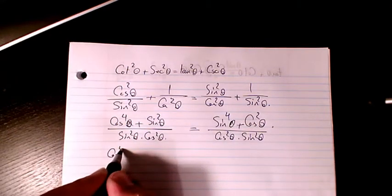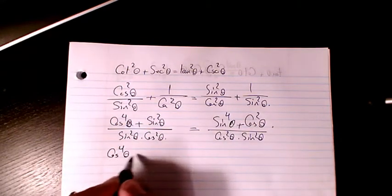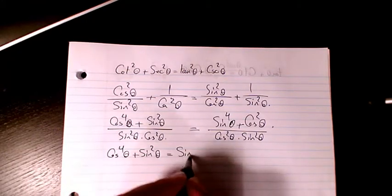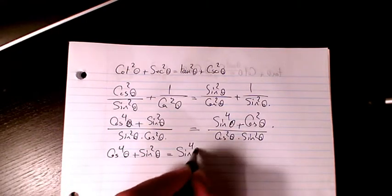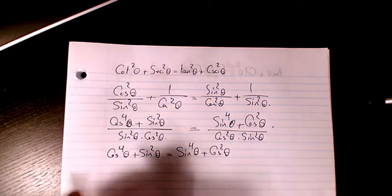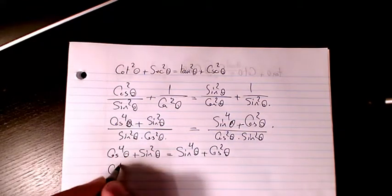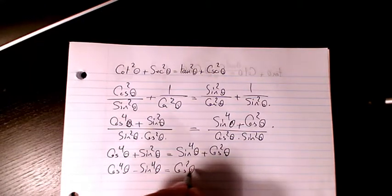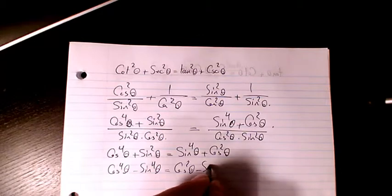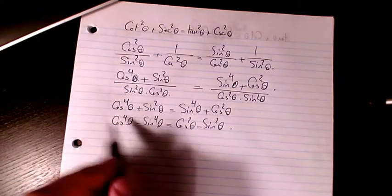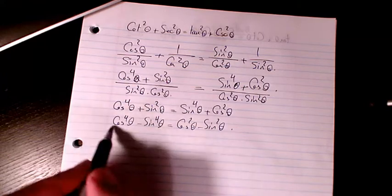The denominators are the same, so the numerators must be equal. So I need to show that cosine to the power of 4 plus sine squared theta equals sine to the power of 4 plus cosine squared theta. Rearranging, this gives cosine to the power of 4 minus sine to the power of 4 equals cosine squared theta minus sine squared theta.